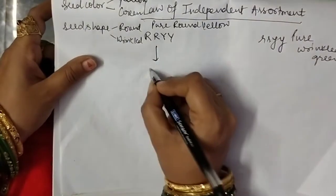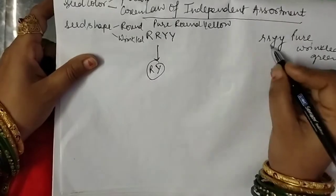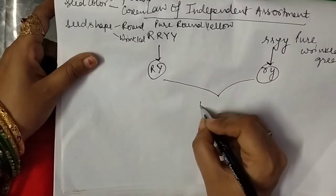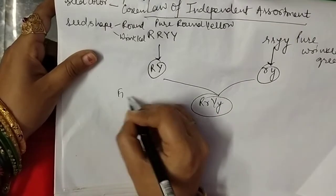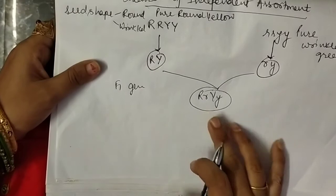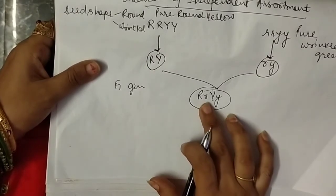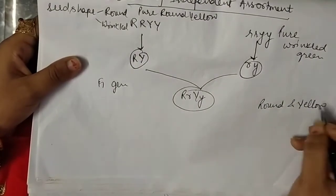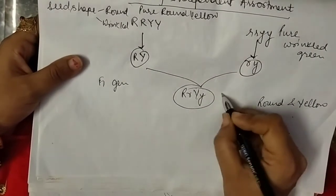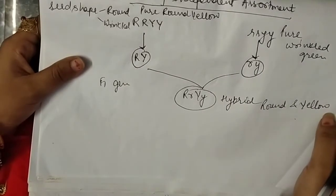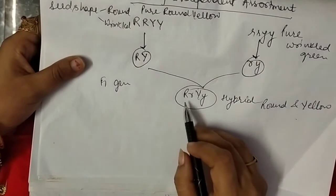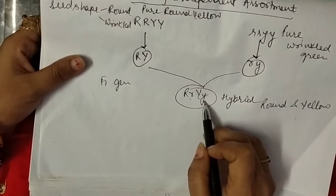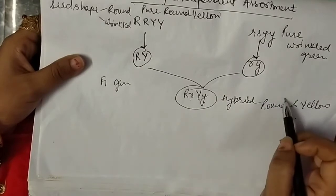From one parent, one round gene and one yellow gene come, and from the other parent, one wrinkled gene and one green gene come. When these genes combine together, all F1 generation offspring have the genotype RrYy. According to the first law of Mendel, the dominant character shows itself but in the hybrid condition — round and yellow — because the round gene is paired with wrinkled and the yellow gene is paired with green. So in the first generation, the dominant character shows itself in hybrid condition.